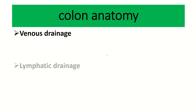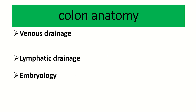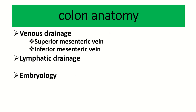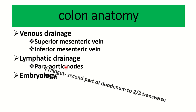Now for venous drainage and lymphatic drainage. The venous drainage occurs by two important veins: the superior mesenteric vein and the inferior mesenteric vein. The superior mesenteric vein and inferior mesenteric vein drain blood from the colon.